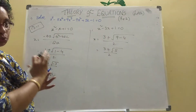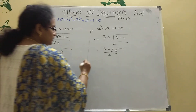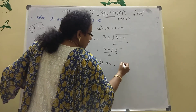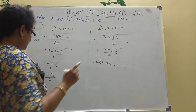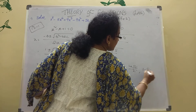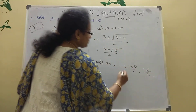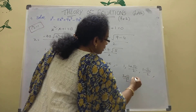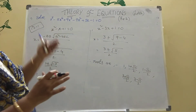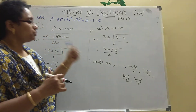Total how many values? Here power 5, so total 5 values will come. Therefore the roots are: x = 1 (first root from x = 1), then (1 + √3·i)/2, (1 - √3·i)/2, (3 + √5)/2, (3 - √5)/2 — total 5 values. Because power 5 is there. It is easy only — don't lose the marks, you will easily do this one.